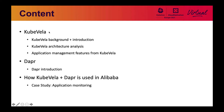In the following, I will first introduce KubeVela's background and overview. Then I will dive into its architecture and provide more detailed analysis. I will conclude KubeVela's section with some of its key features for application management. Then I will give a brief introduction about Dapr, and finally talk about how Alibaba uses KubeVela and Dapr in production and do a case study on application monitoring.